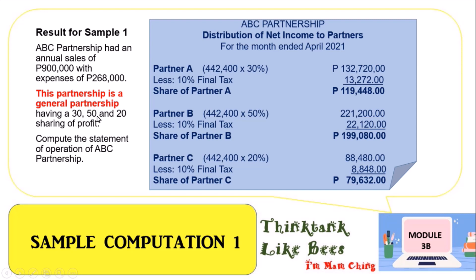For Partner B, she has a 50 percent share: 442,400 times 50 percent equals 221,200. Less the 10 percent final tax of 22,120, so Partner B's net share is 199,080. For Partner C, she has 20 percent: 442,400 times 20 percent equals 88,480, minus the 10 percent final tax of 8,848, leaving a net share of 79,632. I hope you understand sample computation number one.